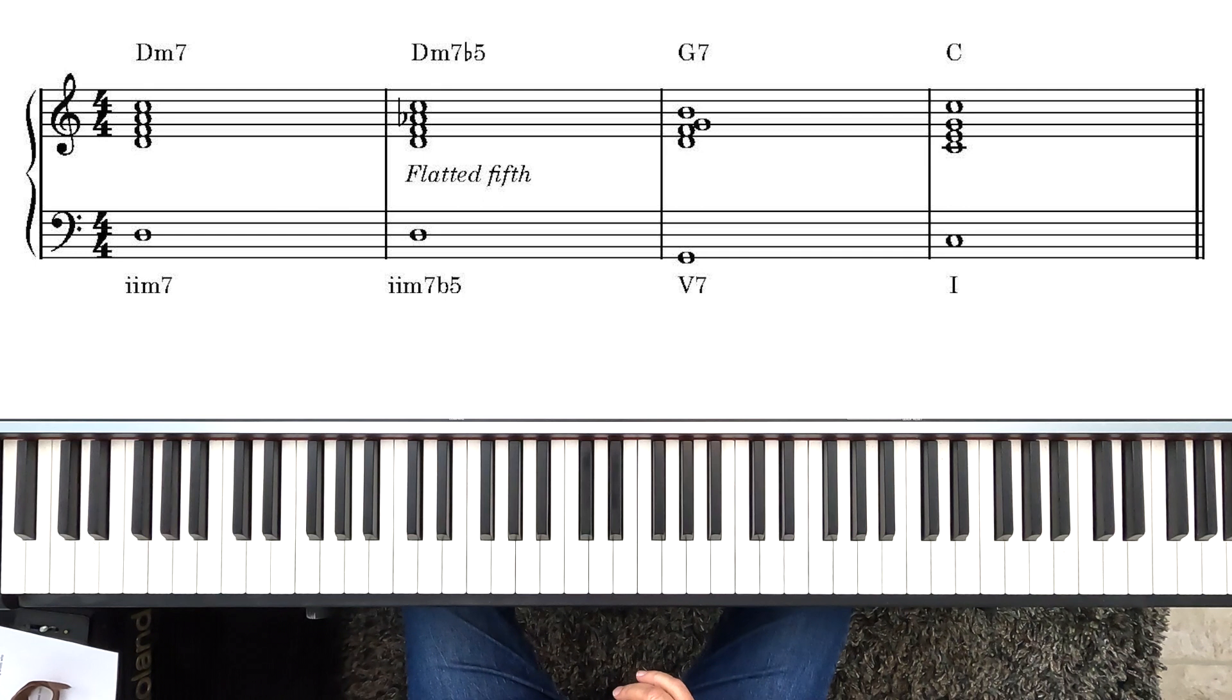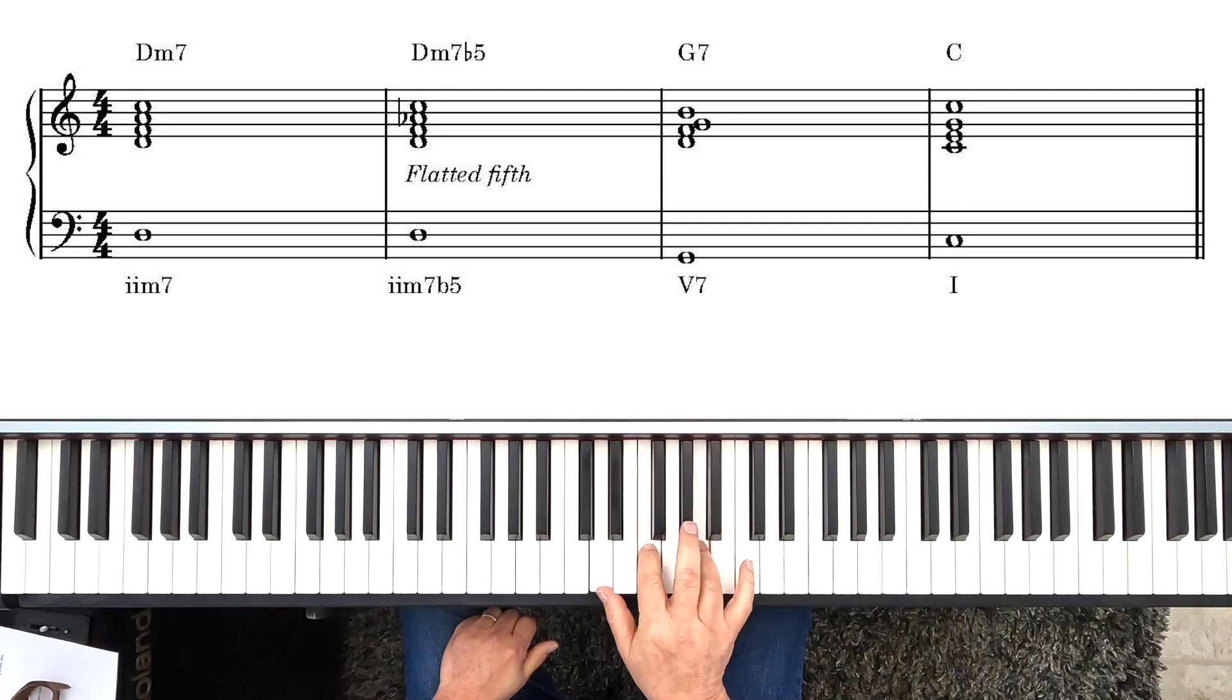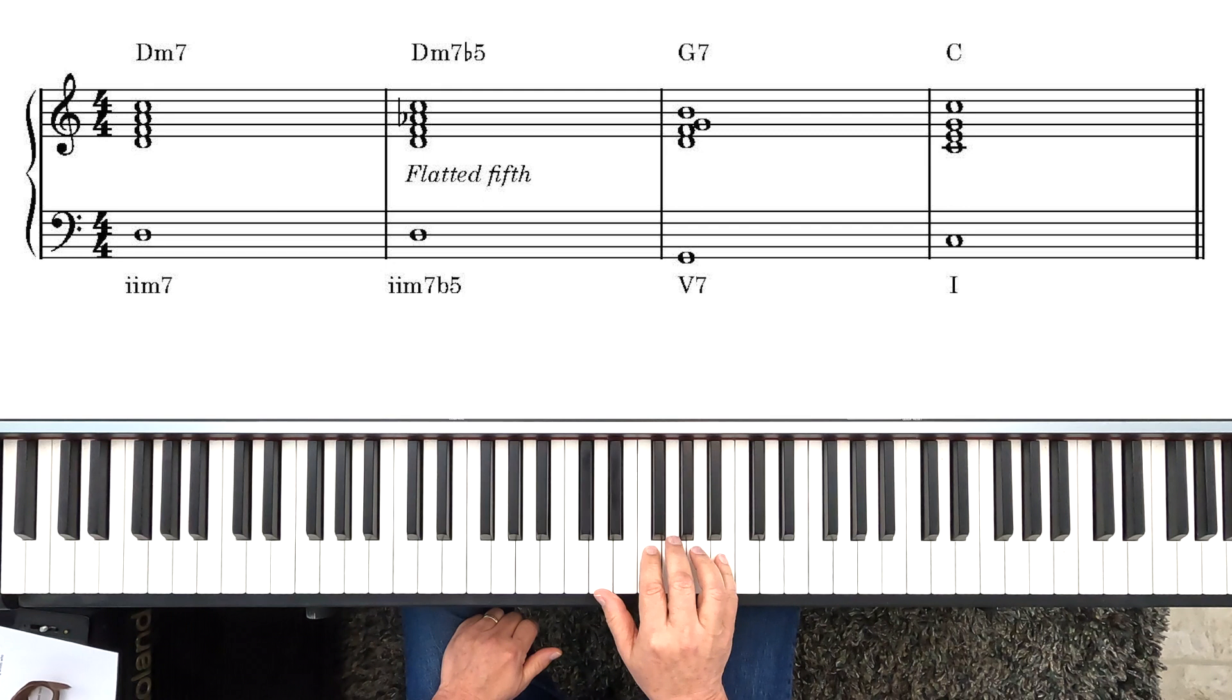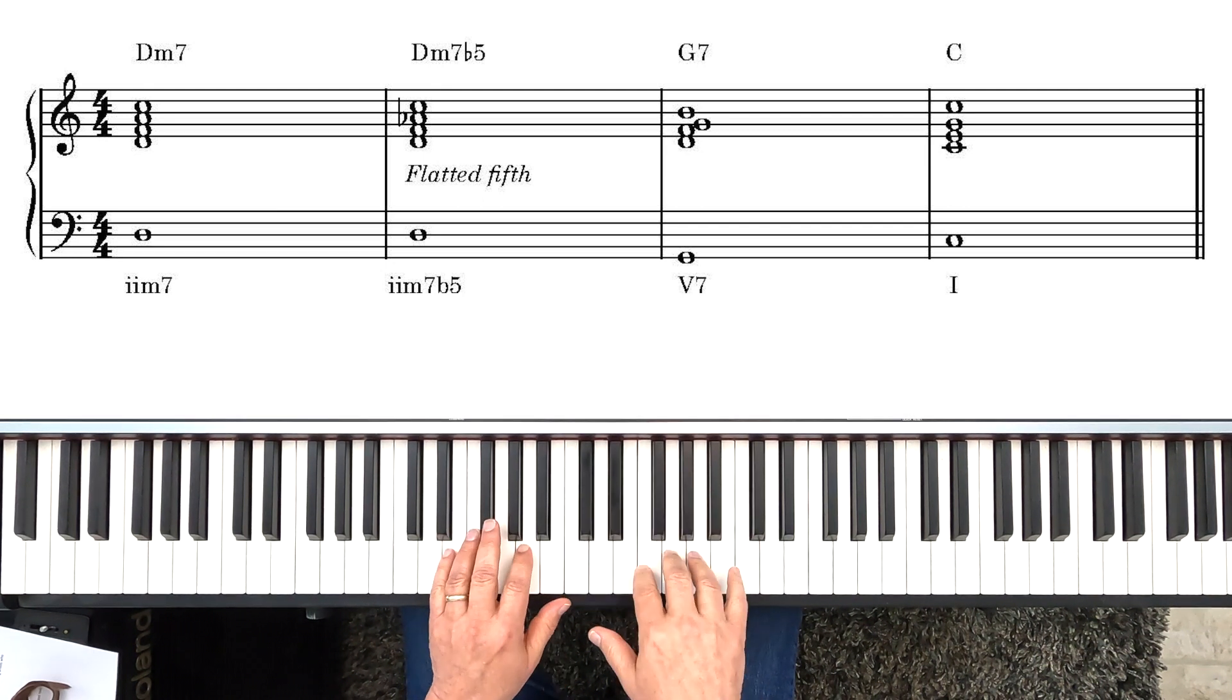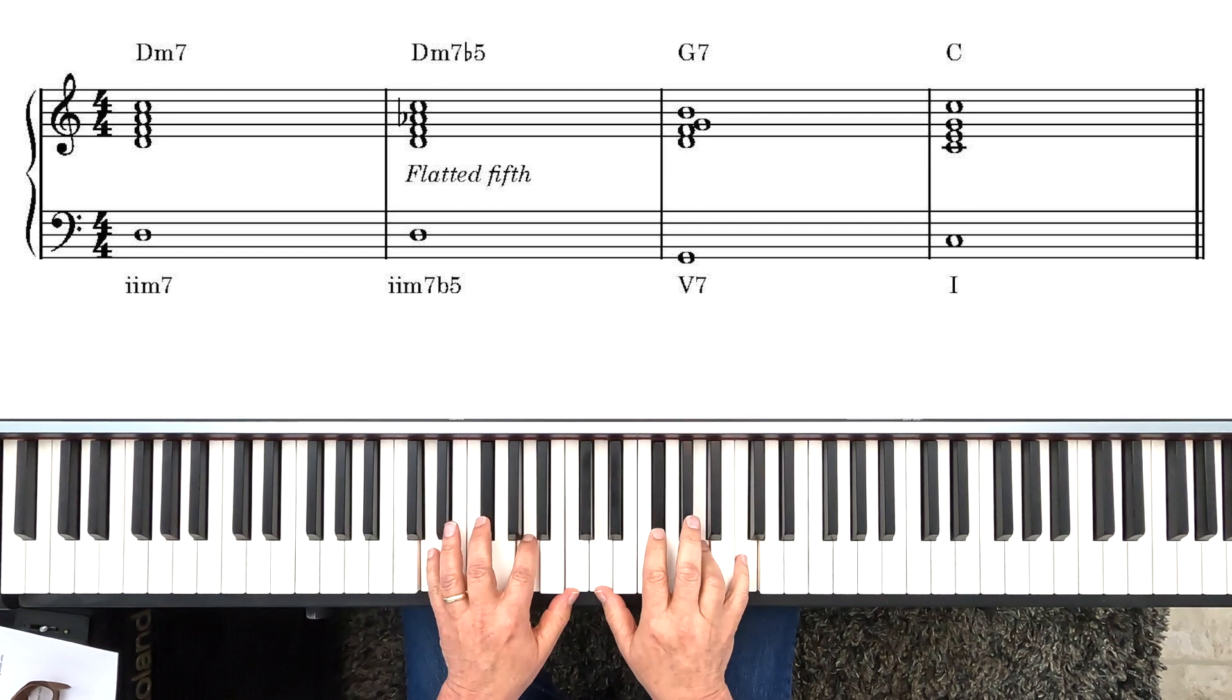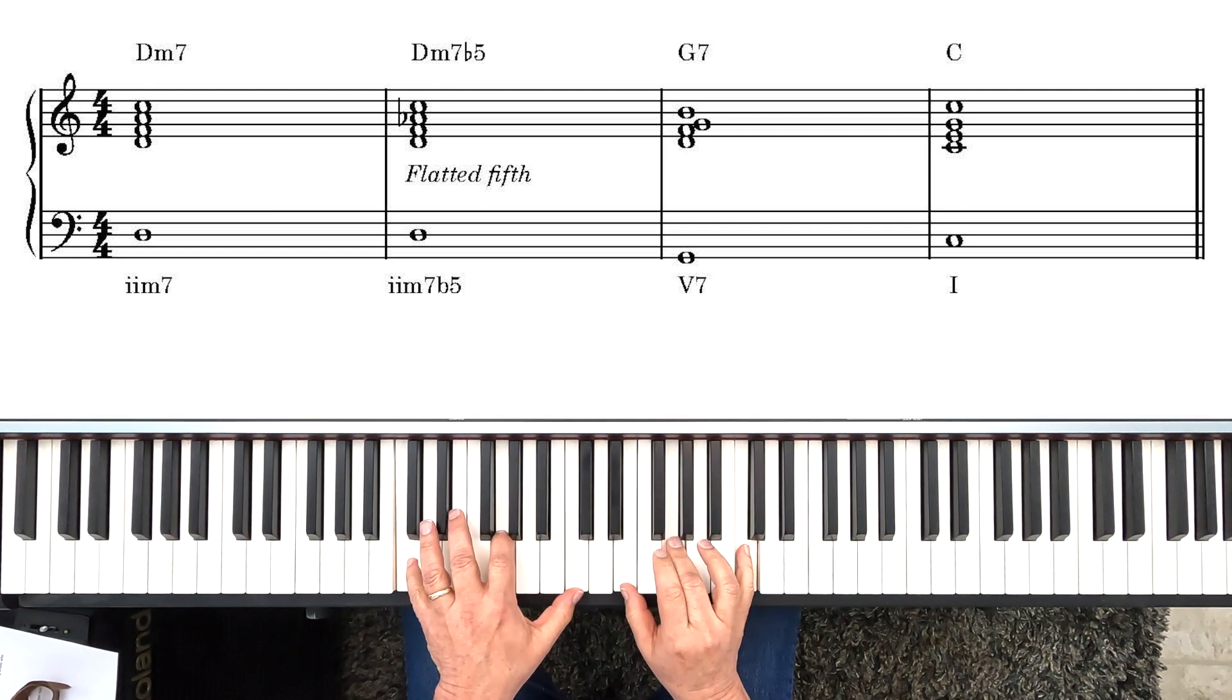Another way that we can alter the II chord, the II7 chord, is by lowering the 5th or flatting the 5th. And this creates a half diminished 7th chord. So we went from this to this.